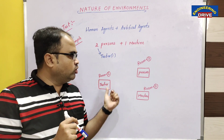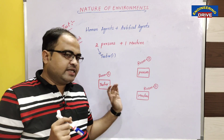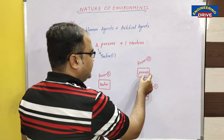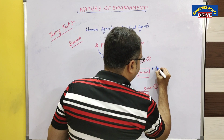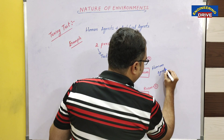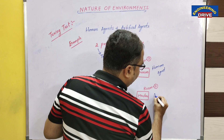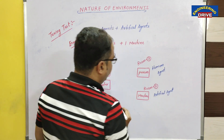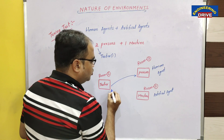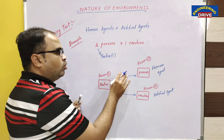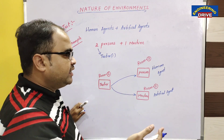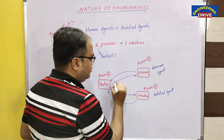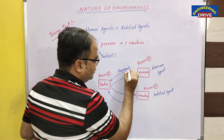The job of the tester is to determine who is intelligent. So what will the tester do? The tester will send some set of questions to both the person — the human agent — and the machine — the artificial agent. Once the person and the machine receive the message, they will send typed responses back to the tester.